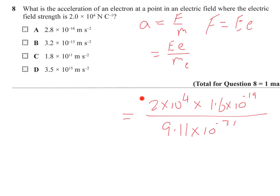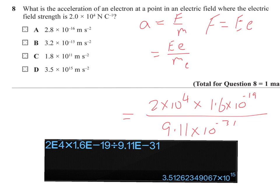So, we end up with 2 times 10 to the 4 coming from the question. The electron charge going in, the electron mass going in. And we just need to evaluate this for an acceleration. And I am getting this value, which is indicating that this is the answer.